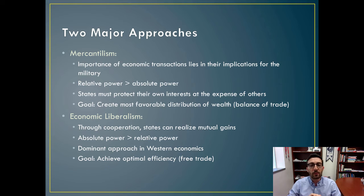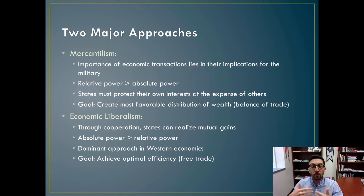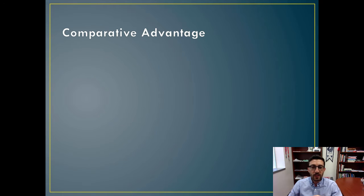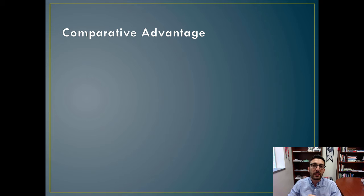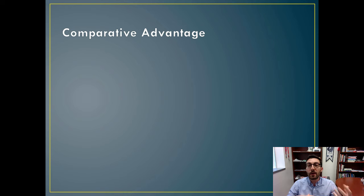The goal for economic liberals is to achieve optimal efficiency, and that can be attained through promotion of free trade, which we'll discuss more throughout this lecture. We're going to pause for a moment and watch a brief video that explains comparative advantage, because it is the theory that helps to explain especially the economic liberal standpoint.